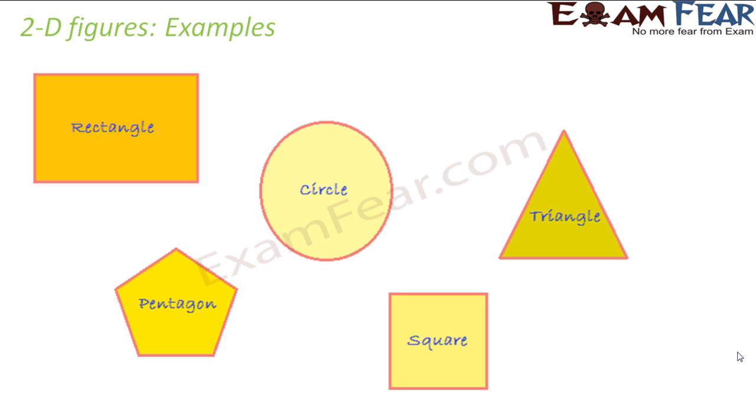So let us look at some examples of two-dimensional figures. Here you see some geometrical shapes like rectangle, circle, triangle, pentagon, square, and all of them are two-dimensional.